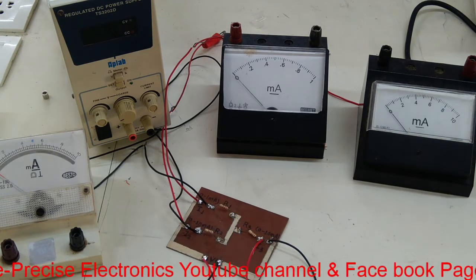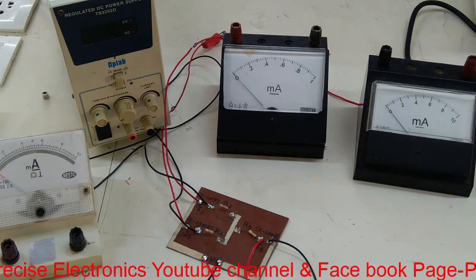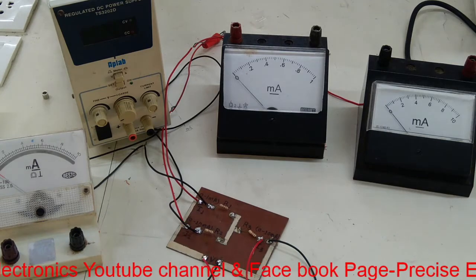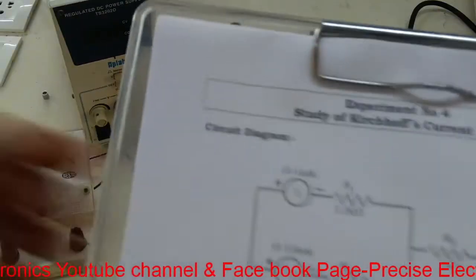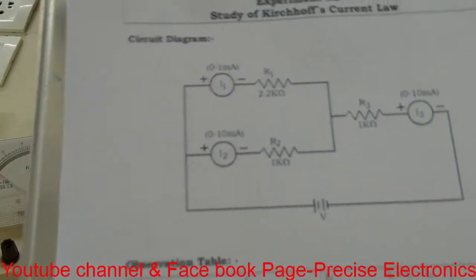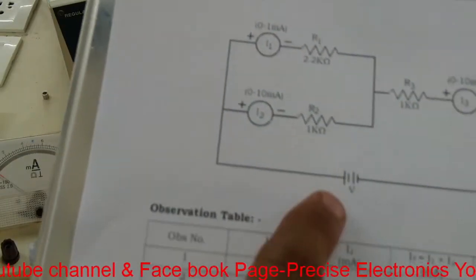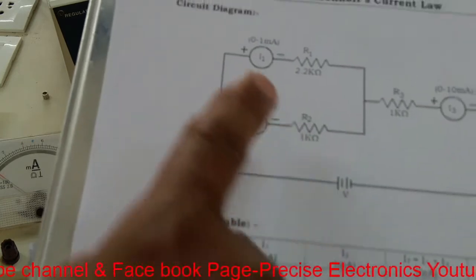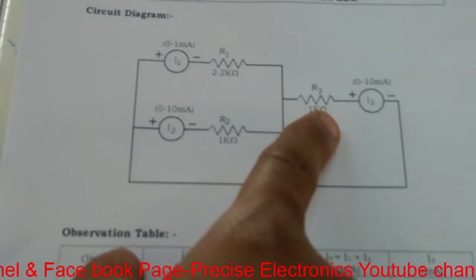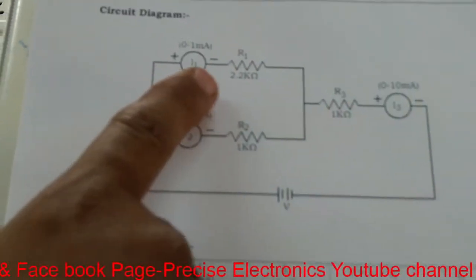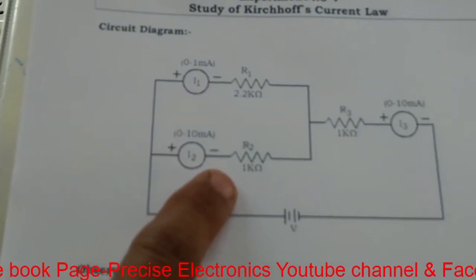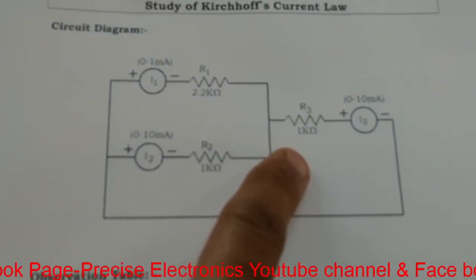For practical verification of Kirchhoff's Current Law, let's study the circuit diagram. This is a circuit diagram for KCL. There is a battery, and two resistors R1 and R2 form a junction. R3 is connected after the junction. R1 is 2.2 kilo ohm, R2 is 1 kilo ohm, and R3 is 1 kilo ohm.